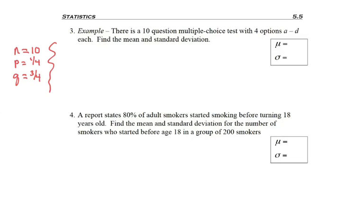n is ten questions. The probability of success is one-fourth, because there's four options. It happens to be a through d, but there's four options. And so the probability of failure is three-fourths, because the other three out of four options would be incorrect.